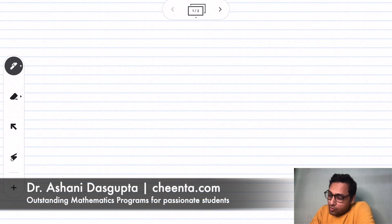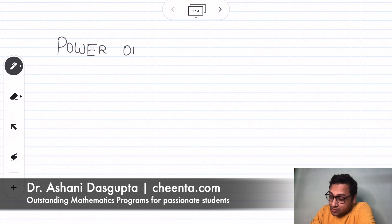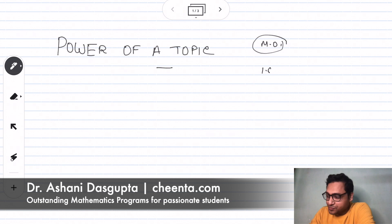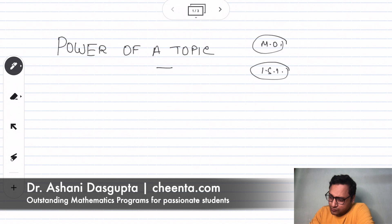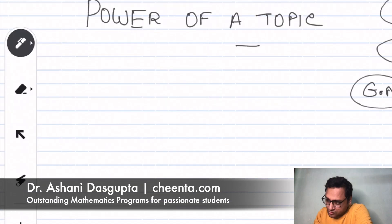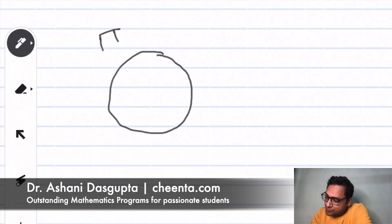Let's learn about Power of a Point — a very important topic in geometry. We usually learn it in our Math Olympiad program, ISI entrance program, and CMI entrance program at Chinta. It's in the geometry module. So what is this topic all about? Suppose you have a circle — let's call this circle gamma — and suppose you have a point somewhere in the plane. It could be on gamma, but let's say somewhere in the plane you have this point P.